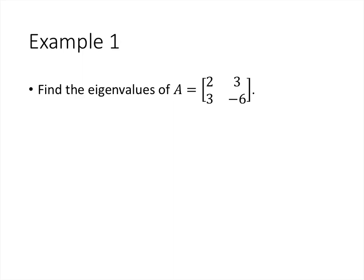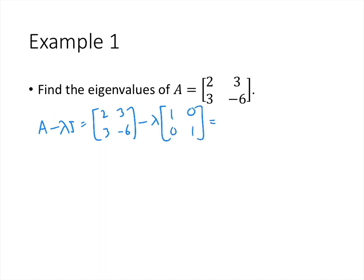Let's look at an example. If A is the matrix [2, 3; 3, -6], then A minus lambda I is formed by subtracting lambda times the identity matrix. That gives us the matrix [2 minus lambda, 3; 3, negative 6 minus lambda]. We take the determinant of that 2 by 2 matrix, leaving lambda as a variable, and set that determinant equal to zero to find the eigenvalues.